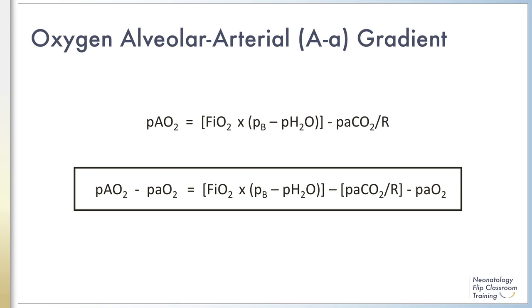In addition to understanding how the A-a gradient is derived, it is important to understand how it can change in certain disease states and its implications. In room air, the A-a gradient increases with increasing ventilation-perfusion mismatch, implying that there is worsening oxygen transfer.